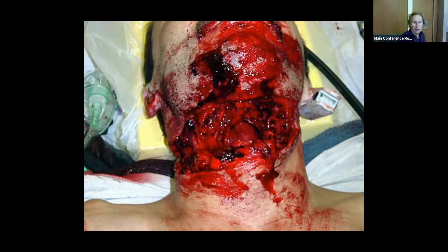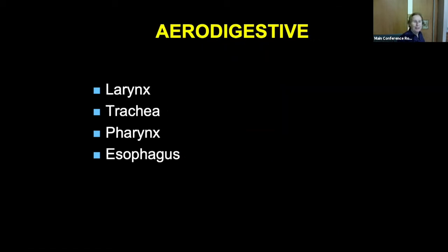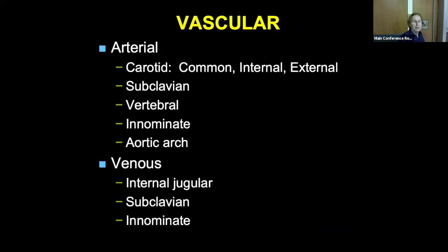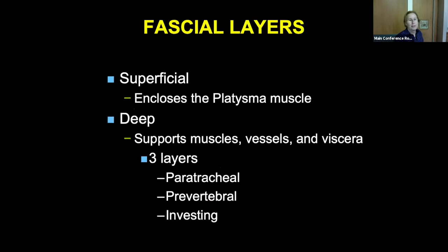Going through all the structures: there are aerodigestive structures, vascular structures, neurologic structures, ducts, and glands — everything is in there. The airway, the digestive tract — injuries can occur. Vascular structures include the carotid, subclavian, vertebral, aortic arch, and major venous structures. Neurologic structures include the spinal cord, cranial nerves, and phrenic nerves. You can do a lot of damage from an injury.